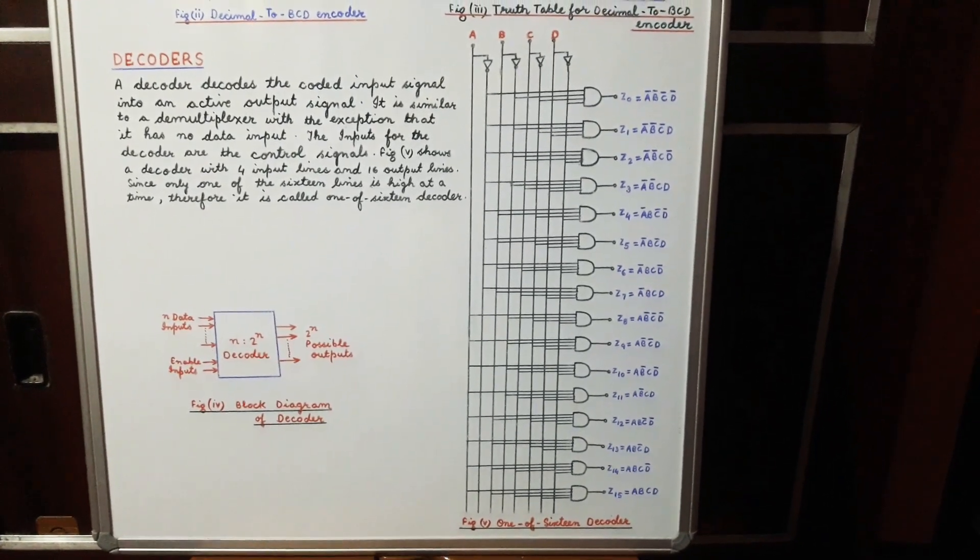Now let us consider the case when A B C D is 0000. In this case, only the AND gate with output Z0 has all inputs high, so only output Z0 is high. When the value of A B C D is taken as 0101, then only the AND gate with output Z5 has all inputs high, and so only output Z5 is high.